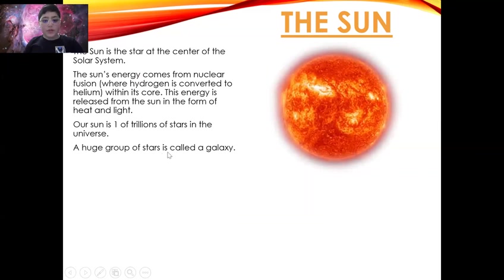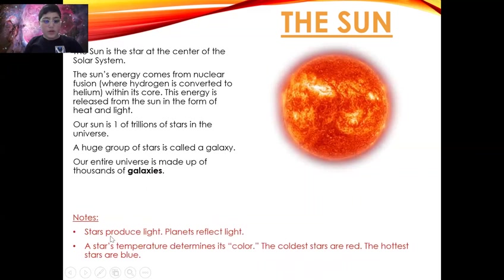A huge group of stars is called a galaxy. Our entire universe is made up of thousands of galaxies. Stars produce light. Planets reflect light. A star's temperature determines its color. The coldest stars are red and the hottest stars are blue.